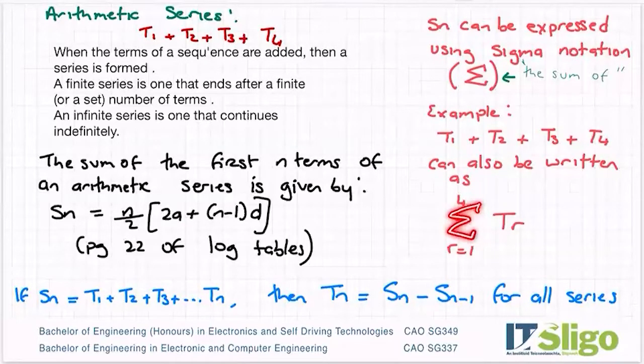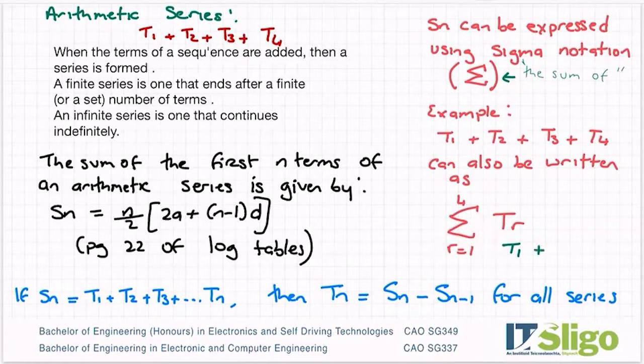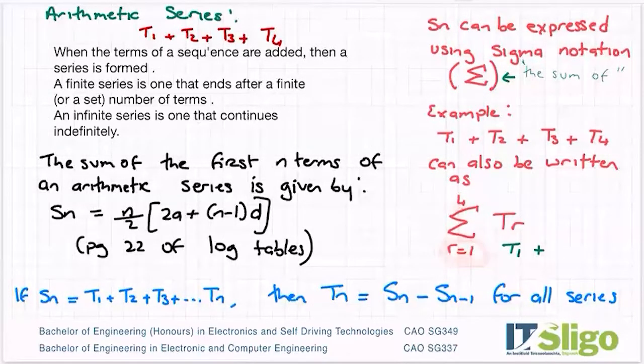Well, it's the sum of R is equal to 1 to 4 of TR. So what does that mean? Well, that means then that my first term, I let R equal to 1 so that I'll become T1. So all I did there was sub in 1 for T. Sigma means the sum of, so I'm going to add. Or then see R goes between 1 and 4. So once you're done with R is equal to 1, you go up one more. So R is now 2, so this becomes T2.